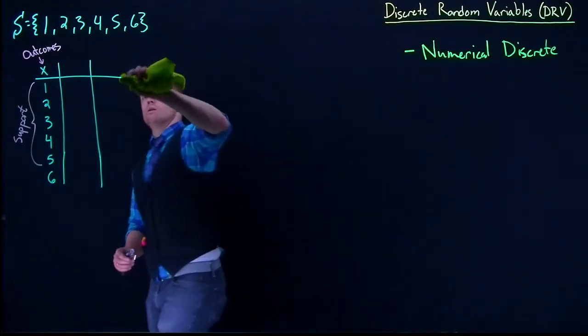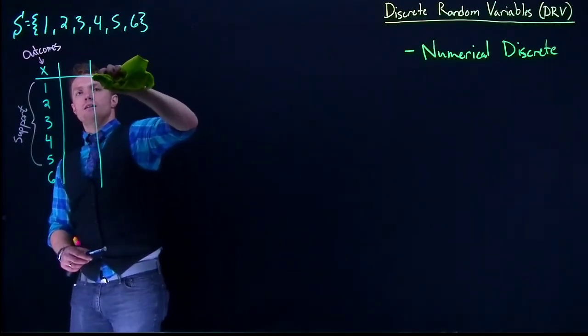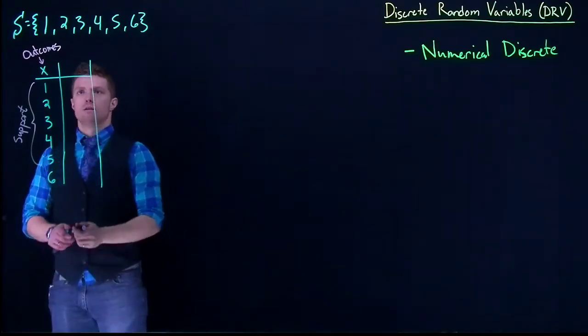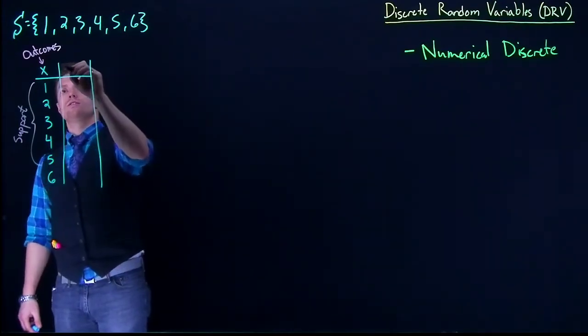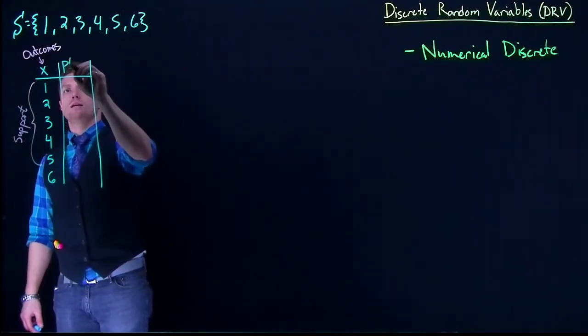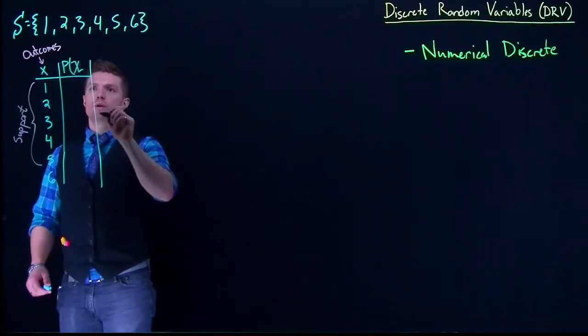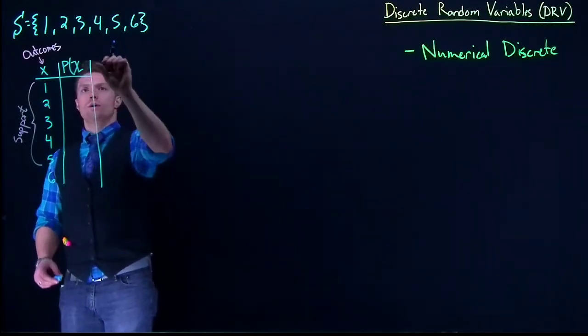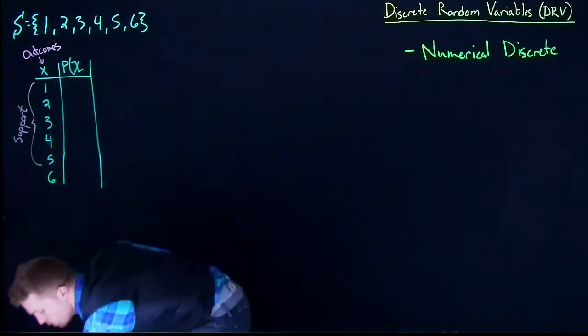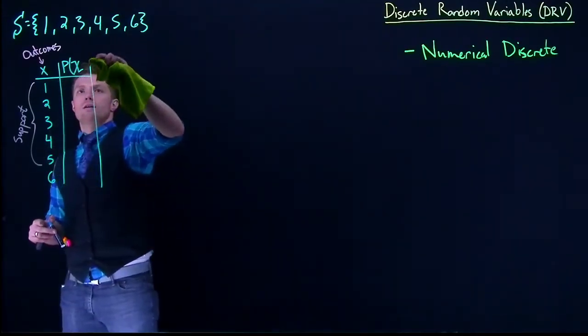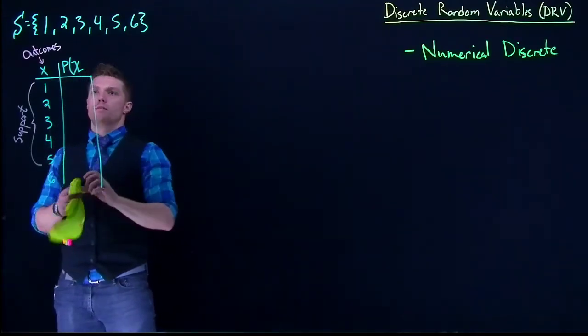We call this the probability that our discrete random variable is going to be equal to a specific member of the support.